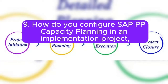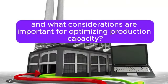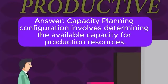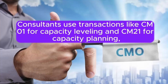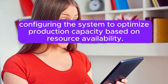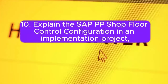Question 9: How do you configure SAP PP capacity planning in an implementation project, and what considerations are important for optimizing production capacity? Capacity planning configuration involves determining the available capacity for production resources. Consultants use transactions like CM01 for capacity leveling and CM21 for capacity planning, configuring the system to optimize production capacity based on resource availability.